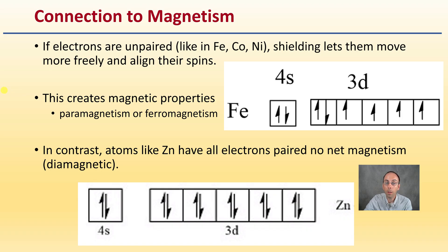In contrast, atoms like zinc that have all electrons paired have basically no net magnetism, called diamagnetic. So as a result here, we're looking and seeing this visual representation, and therefore, by just looking at those electron configurations and knowing this shielding effect, we can infer what's going to have greater or less magnetic properties. All this comes due to that shielding effect.